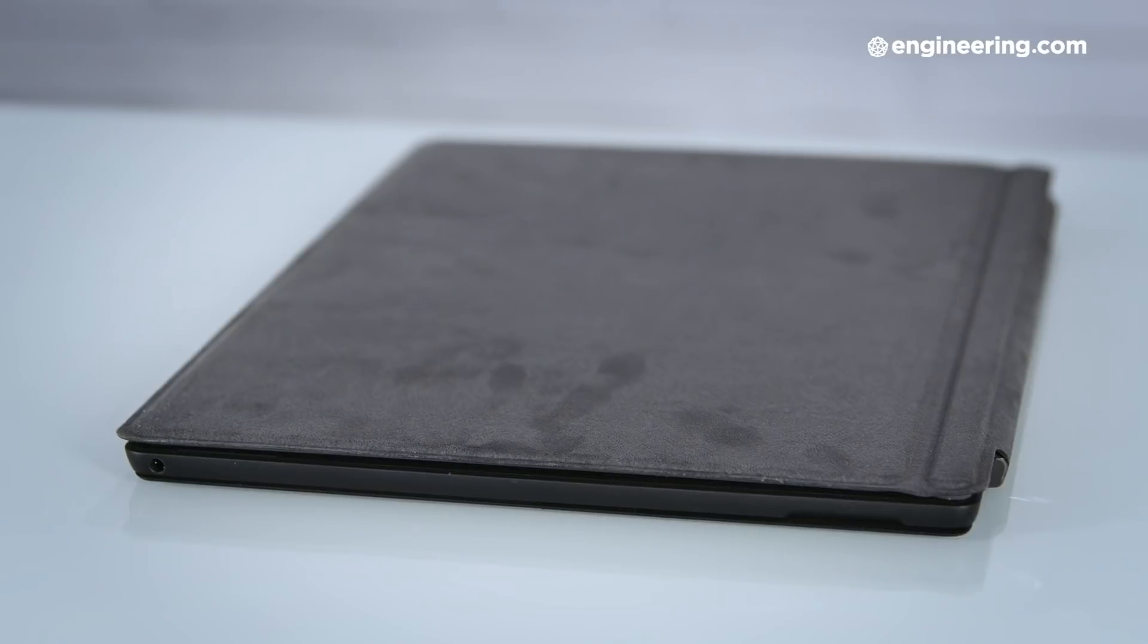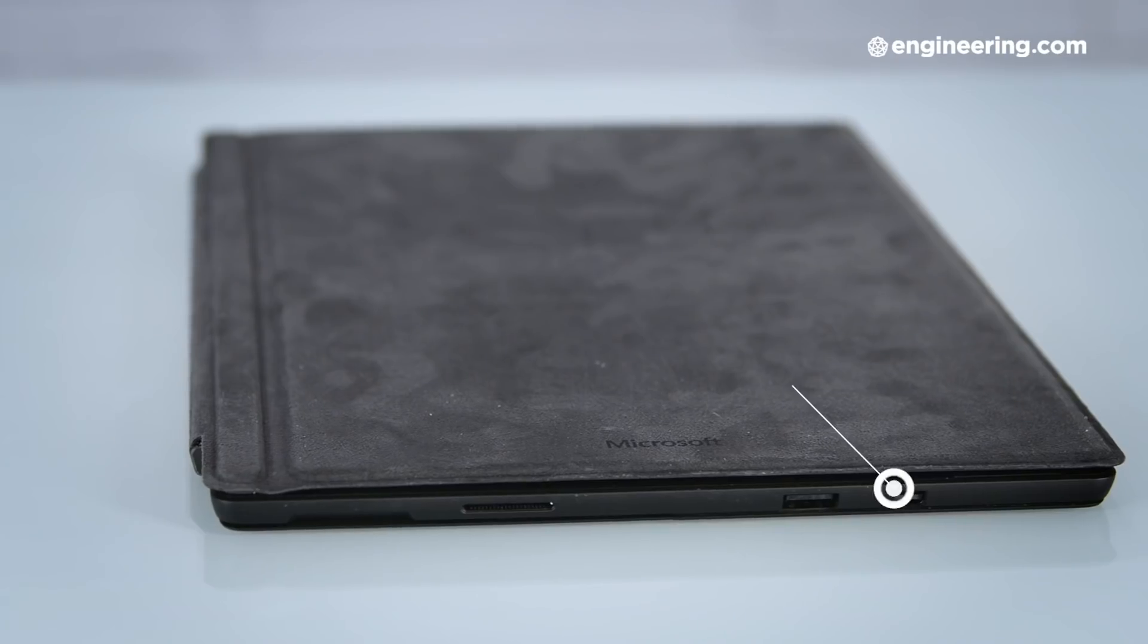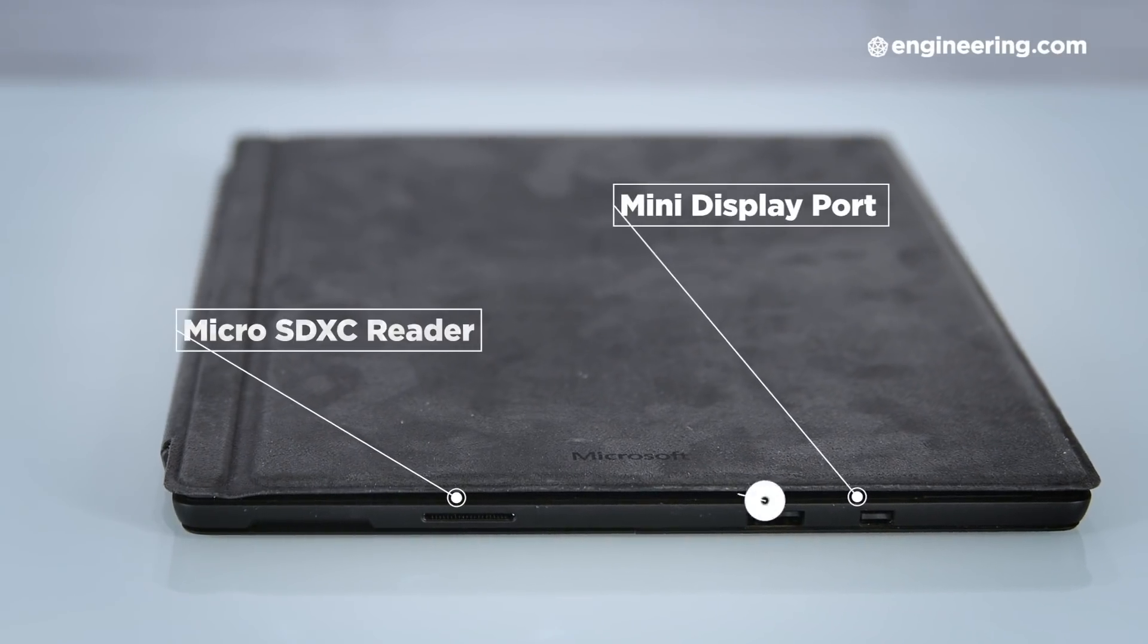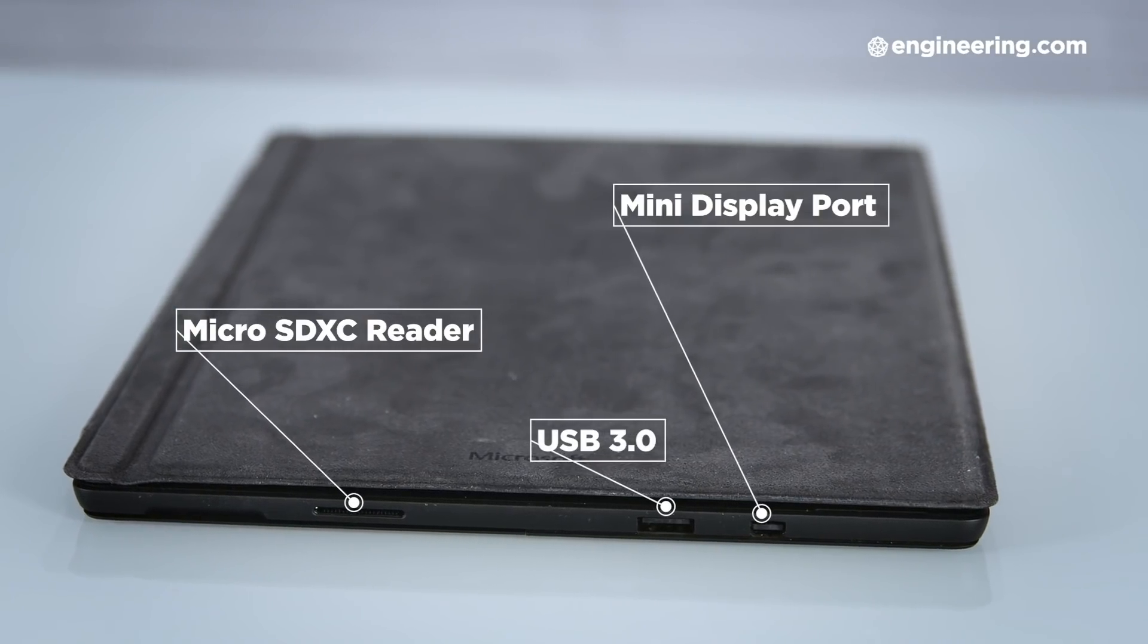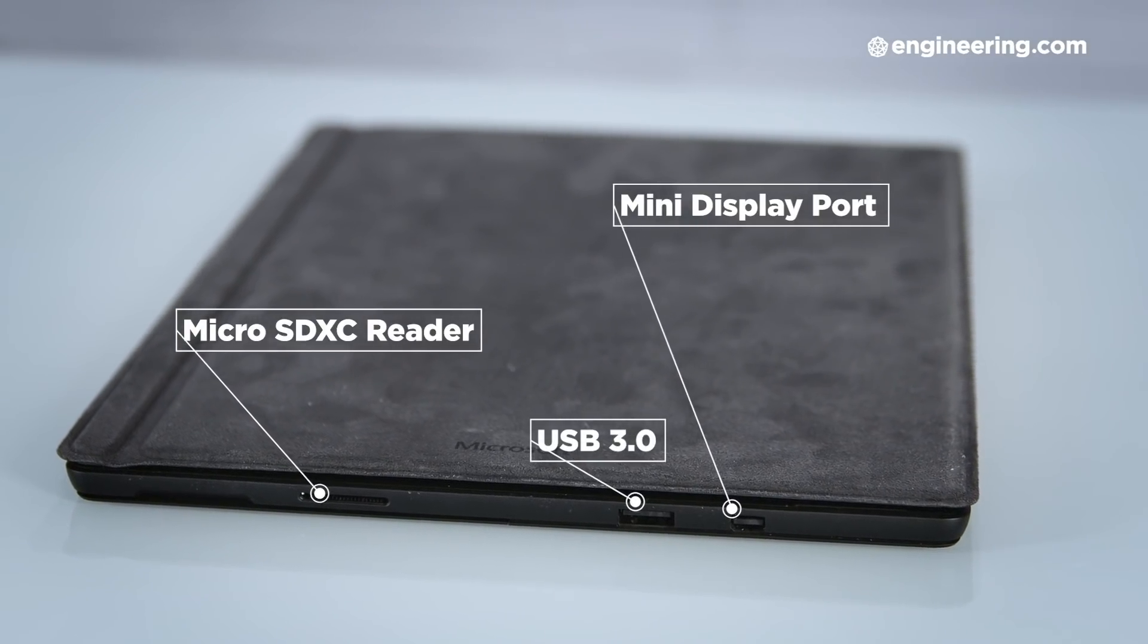But there's another deficiency of the Surface Pro 6 that most users probably will notice, and that's the low number of ports. The SP6 offers a headphone jack, a mini display port, the microSDXC reader, and just a single USB 3.0 port. An extra USB port would have been great, and an extra USB-C port would have been even better, but you're stuck with just the one USB 3.